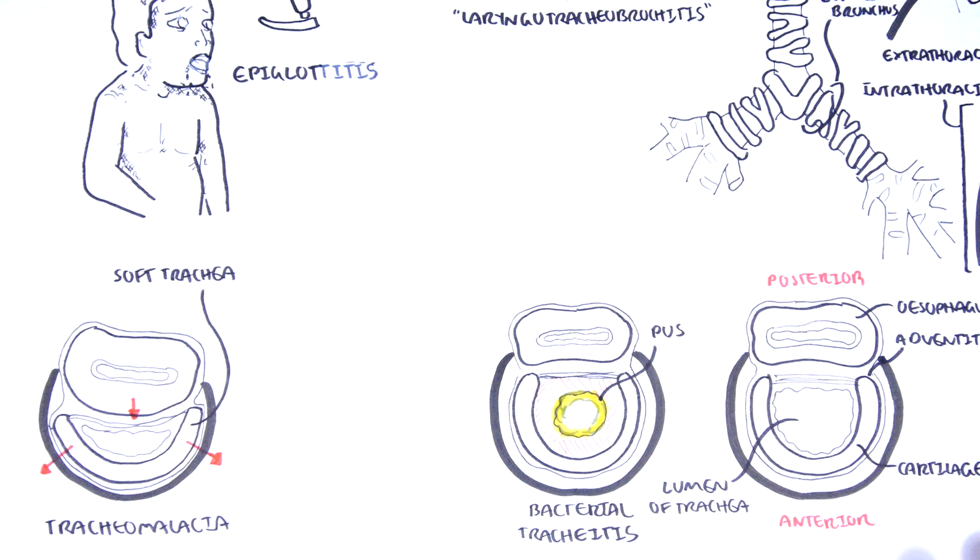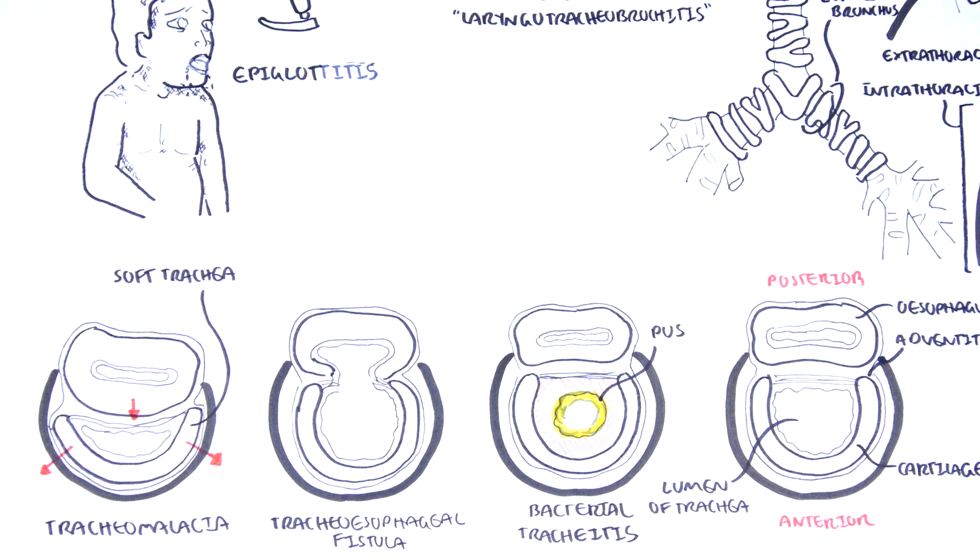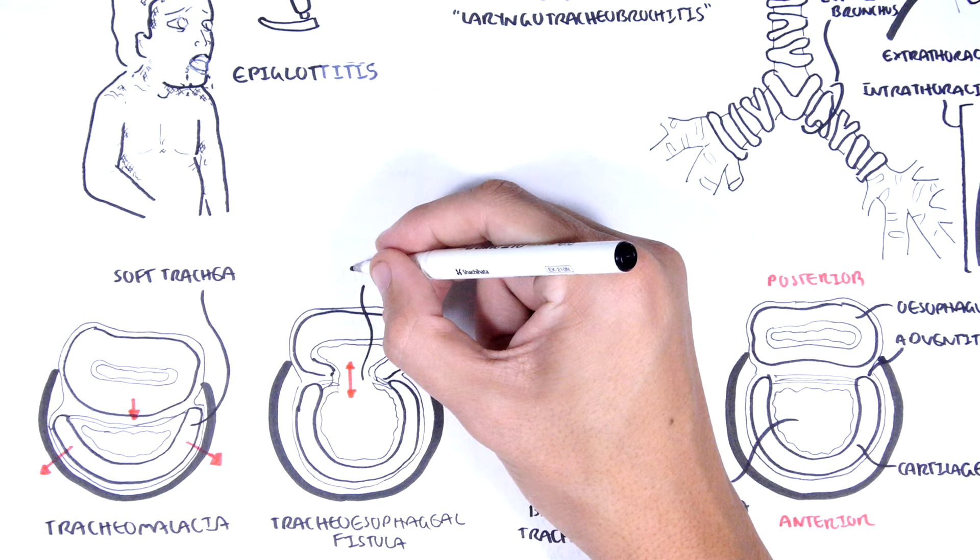Tracheal narrowing occurs with expiration and causes an expiratory stridor, because this area we're already starting to head towards the intrathoracic region. Tracheoesophageal fistula is another cause of congenital stridor, and a fistula is basically an abnormal passage between two hollow spaces, this being the trachea and the esophagus posterior to this.